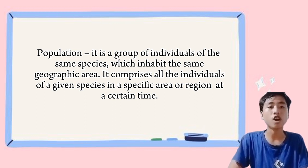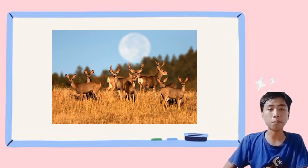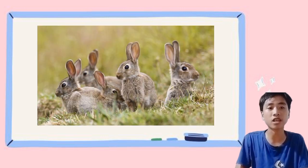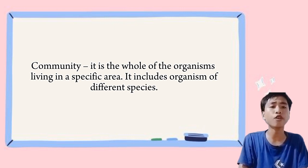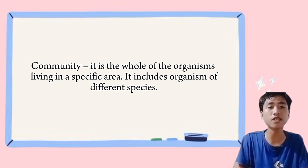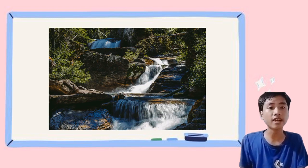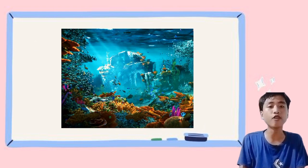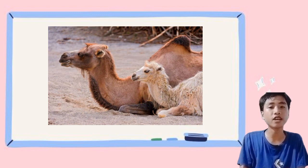A population is a group of individuals of the same species that live in the same area. For example, all the deer in the forest make up a population. Examples of a population could be all the rabbits living in a meadow or all the bees in a hive. The third level is the community — the whole of organisms living in a specific area, including organisms of different species. For example, a forest community includes trees, animals, insects, and other living things. A community could also be all the different plants and animals living in a coral reef, or all the species that live in a desert.